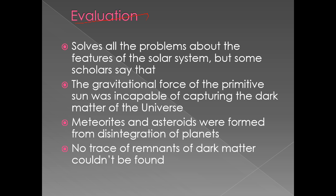This theory solves all the major problems about the features of the solar system. The earlier problems it addresses include the near-circular and similar orbits of the planets, evolution in the equatorial plane of the Sun closely matching the orbital planes of the planets, placement of planets according to their size based on well-founded laws, and the large and peculiar distribution of angular momentum among the planets of the solar system.